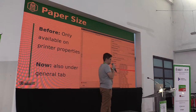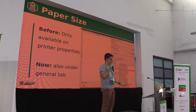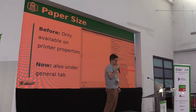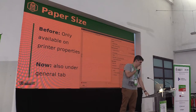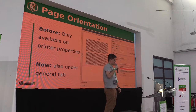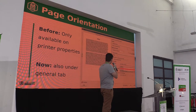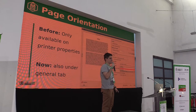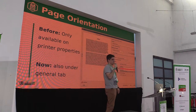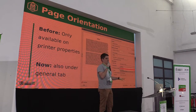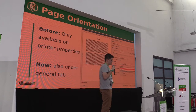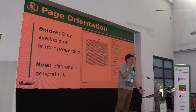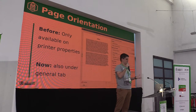Another feature we've added in the print dialogue is the ability to select paper size, which before was only available through printer properties — now it's under the general tab as well. Also, you can now set page orientation in the print dialogue, which is very important in my opinion, because in print dialogues in general — outside LibreOffice as well — it's pretty common to have that option directly in the print dialogue, not just in printer properties. So for the user, it's a bit awkward not to have it there.